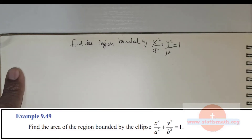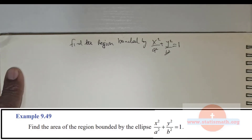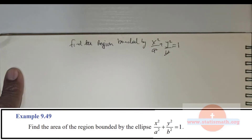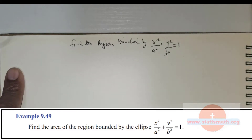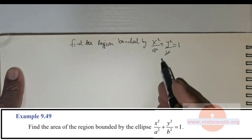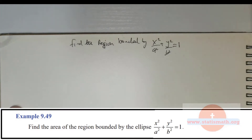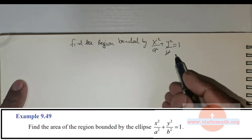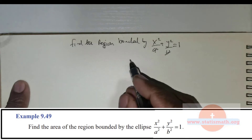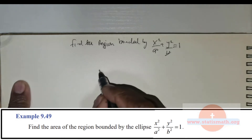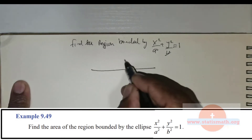Students, we are given this question: find the region bounded by x squared divided by a squared plus y squared divided by b squared is equal to 1. Now, this is the ellipse.